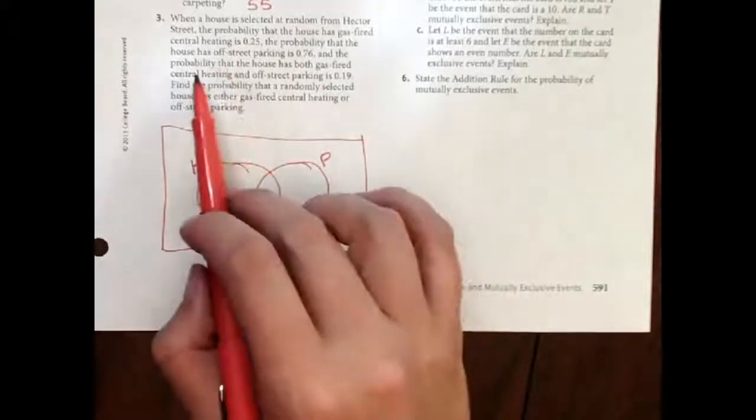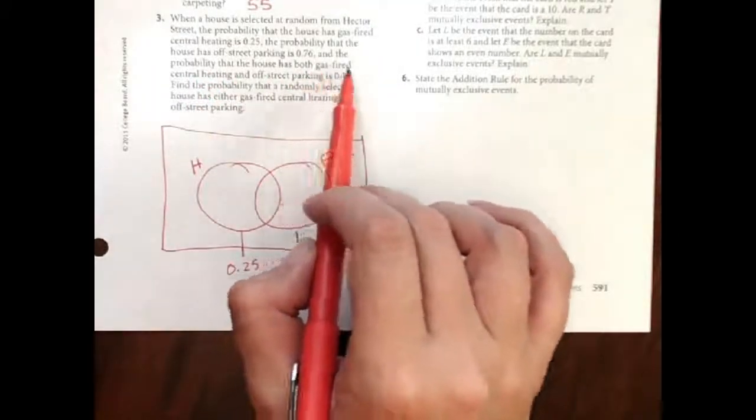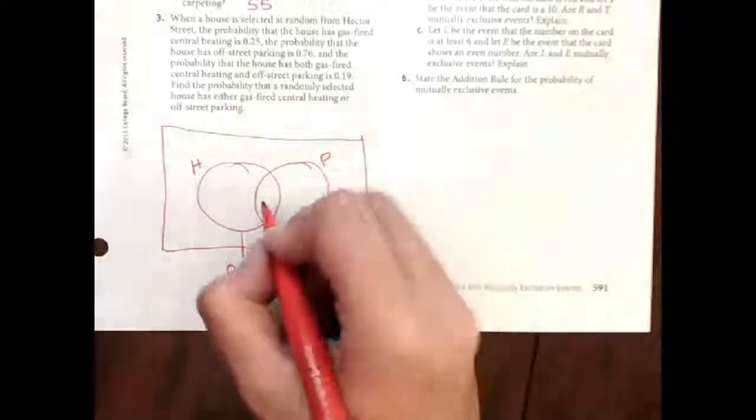And then it tells me that the probability that they have both is 0.19. Well, that's this number here, 0.19.